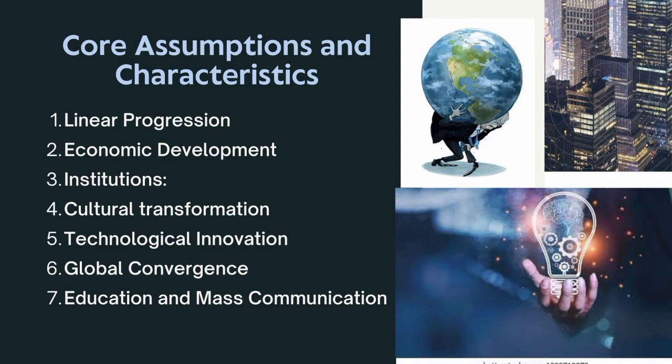The core assumptions and characteristics of modernization theory begin with linear progression — societies move through predictable stages. The theory also emphasizes economic development, saying there should be industrialization. Backward states or third world countries should adopt advanced technologies. Regarding institutions, the theory advocates for the adoption of Western-style institutions, including democracy, market-oriented economies, and legal systems.